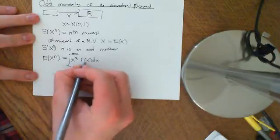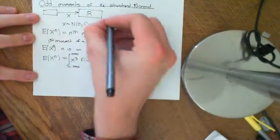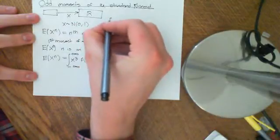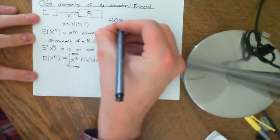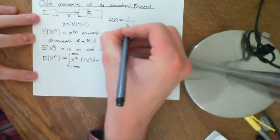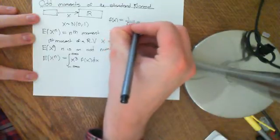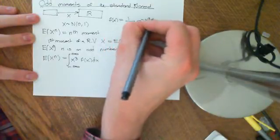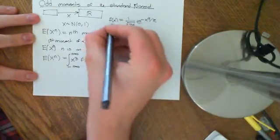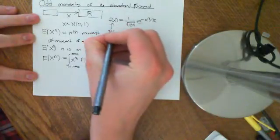Where little f of x is the probability density function of our standard normal distribution. And we saw in the previous videos that this was equal to 1 divided by the square root of 2 pi e to the negative x squared over 2. So that's our PDF, the probability density function.